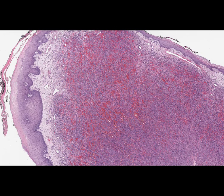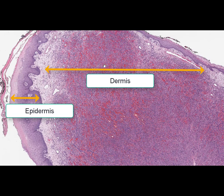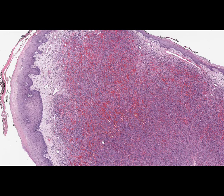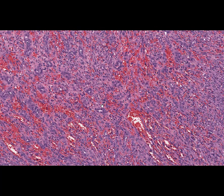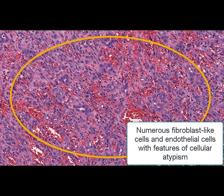At low magnification the epidermis and dermis are clearly seen. In the dermis we can find a highly increased number of cells as well as plenty of hyperemic capillaries. At high magnification the tumor mass is presented by numerous polymorphic cells looking like endothelial cells and fibroblasts, and showing the patterns of cellular atypia.